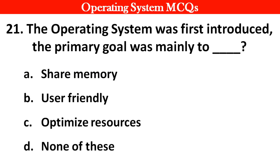Next question: When the operating system was first introduced, the primary goal was mainly to: Options: A. Share memory. B. User-friendly. C. Optimize resources. D. None of these. Right answer is option B: User-friendly.